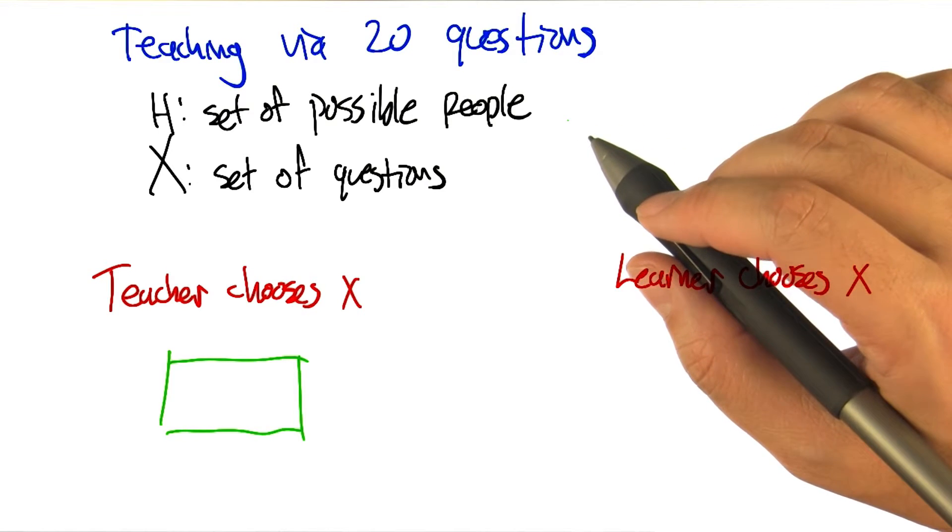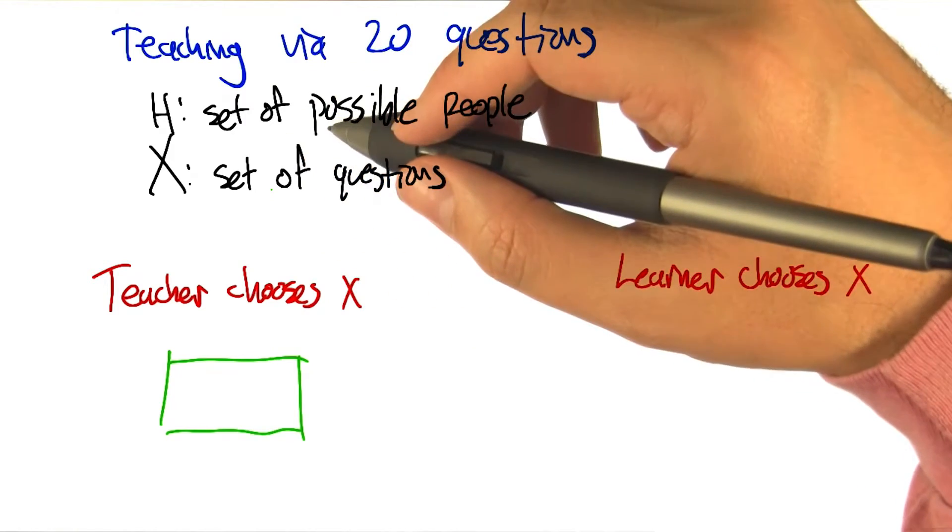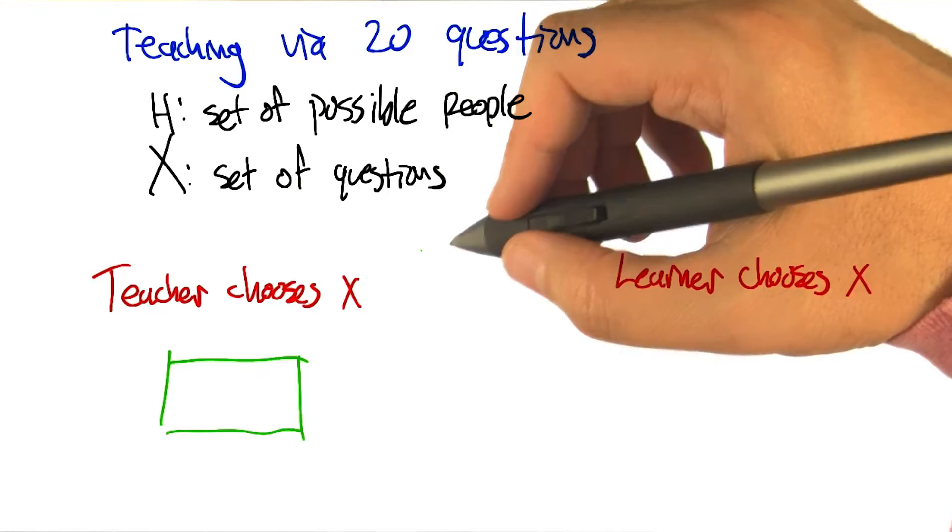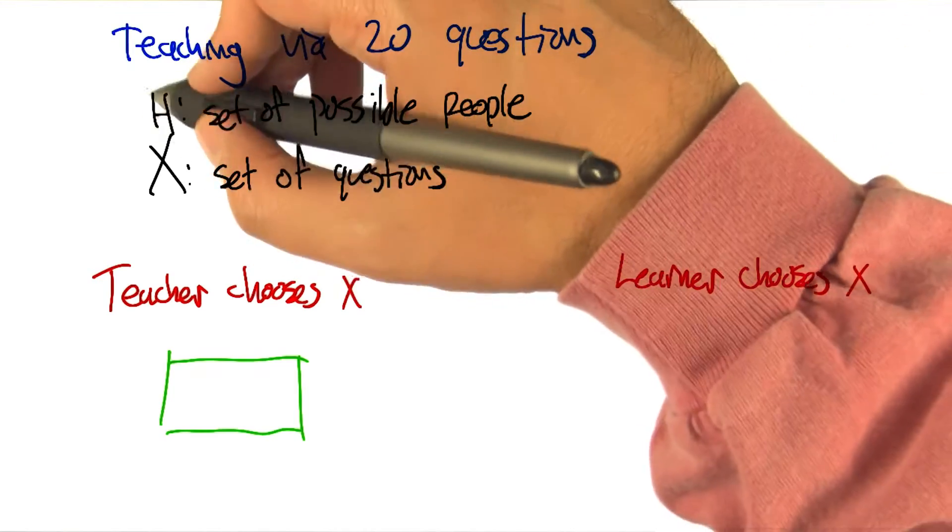So let's go back to 20 questions that we talked about a number of lectures ago. We're going to consider the following analogy: in some sense, what is an inductive learner trying to do? It's trying to find the best hypothesis in some class H.